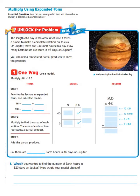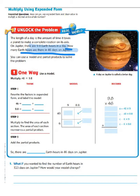Let's take a look at our word problem. The length of a day is the amount of time it takes a planet to make a complete rotation on its axis. On Jupiter, there are 9 and 8 tenths Earth hours in a day. How many Earth hours are there in 46 days on Jupiter? Let's highlight, underline, or circle the important information. We know there are 9 and 8 tenths hours in a day on Jupiter, and it's asking how many Earth hours there are in 46 days on Jupiter.